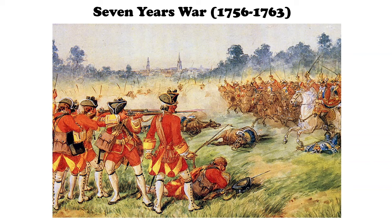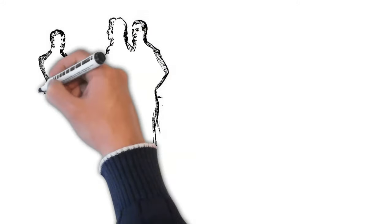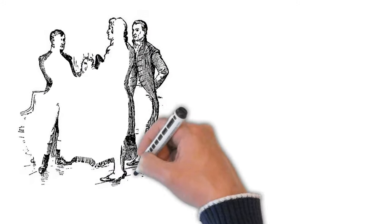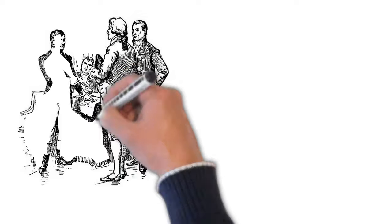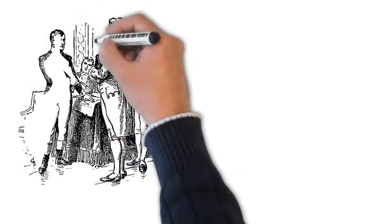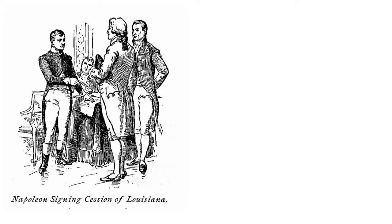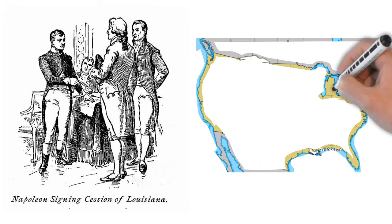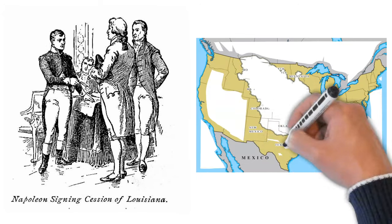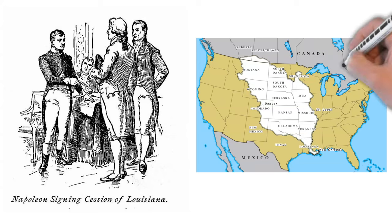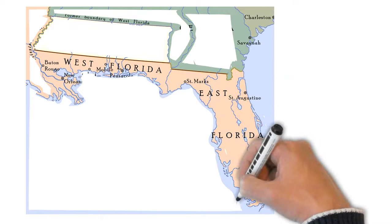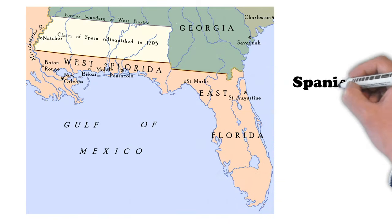A huge part of superpower competition at the time was the annexation of territory, and in the early years the dynamics of the game were tilted in Americans' favor. France opted to sell Louisiana in 1803 to the U.S. rather than see it fall to the British or Spanish, and the United States was able to force the Spanish to cede Florida, given the lack of interest by the other European powers in helping Spain maintain the territory.